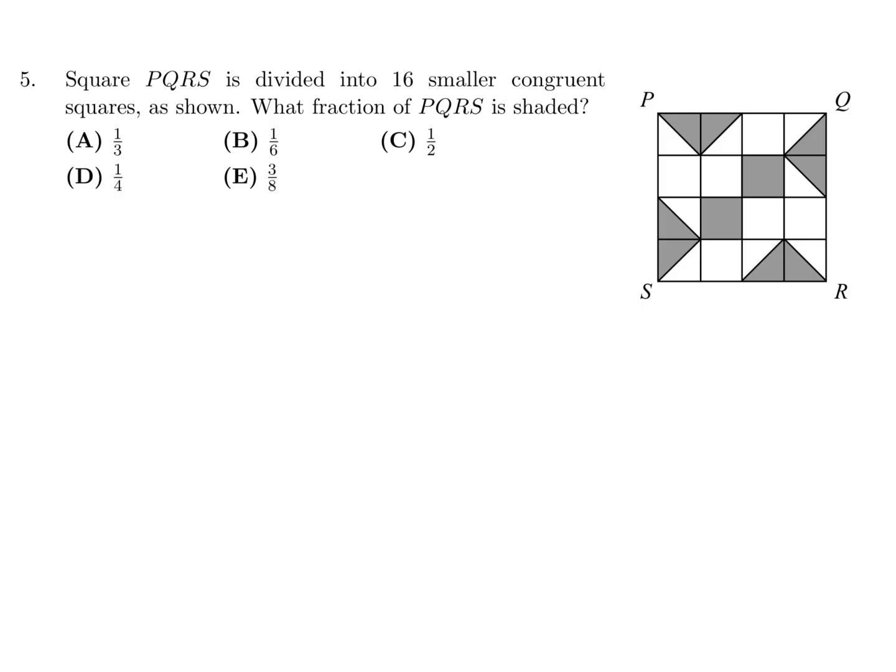Square PQRS is divided into 16 smaller congruent squares, as shown. What fraction of PQRS is shaded? So if you have a square like that, let's cut every square in half, like by making a diagonal. So if you count all the squares, it's 4 times 4, 16 squares. But if you count all the halves, it's 32 of them, 32 triangles.